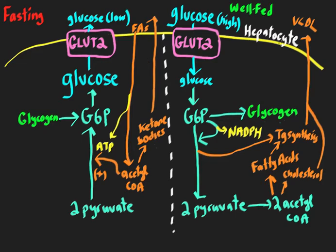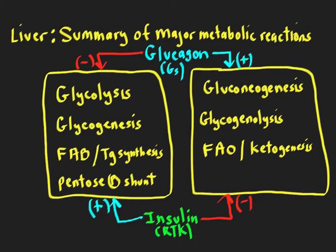If all these reactions are turned on, the opposing reactions from the well-fed state need to be turned off. We don't want glucose converted back to G6-phosphate; we want it to go out of the liver cell, so glycolysis is turned off. We don't want G6-phosphate going back to glycogen after we've broken it down, so glycogen synthesis is turned off. We don't want fatty acids that we've oxidized then going back to make fatty acids from acetyl-CoA. You want to avoid futile cycles — when gluconeogenesis is on, glycolysis must be off.